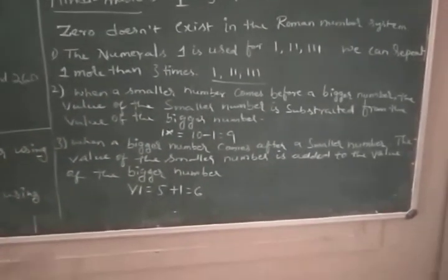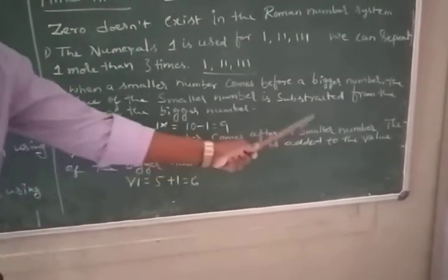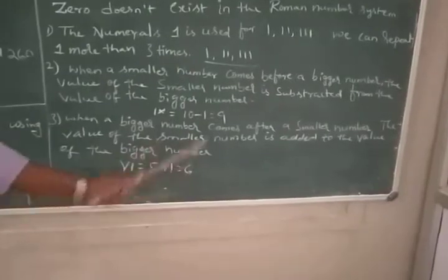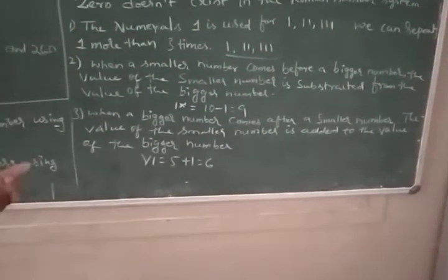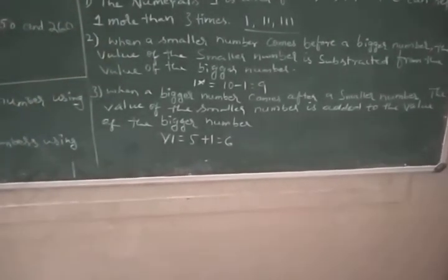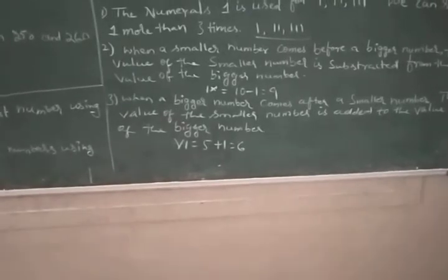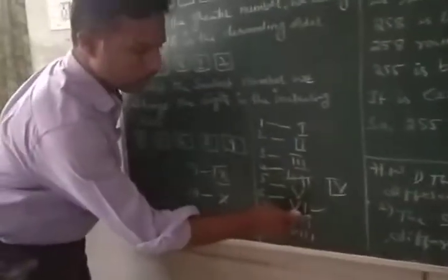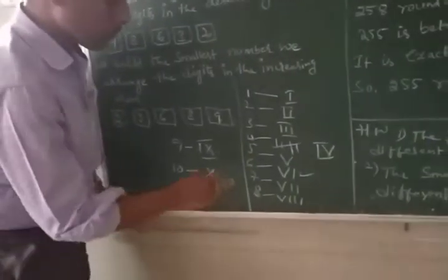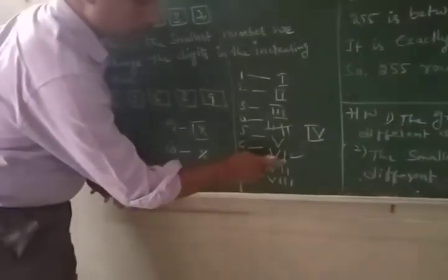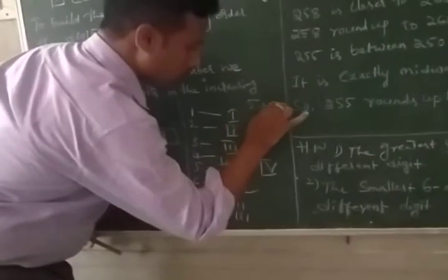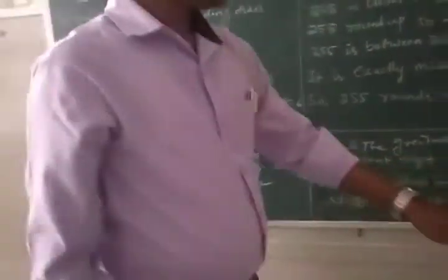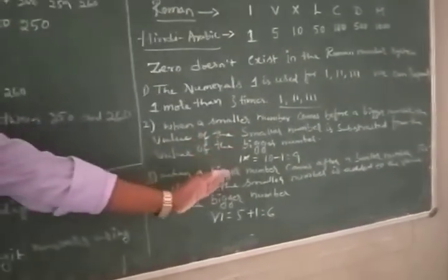When a bigger number comes after a smaller number, the value of the smaller number is added to the value of the bigger number. For example, 6: 5 plus 1, where 5 is smaller compared to 6. That is why VI equals 6. Similarly, VII is 7 and VIII is 8.